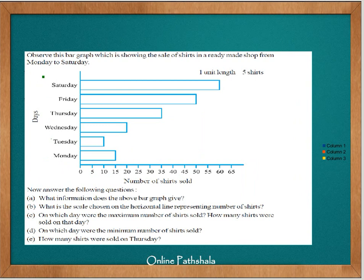This bar graph shows the sales of shirts in a ready-made shop from Monday to Saturday. The first question is: what information does the bar graph give? The bar graph tells us how many shirts were sold on each day in a week. The scale chosen on the horizontal line is 1 unit length equals 5 shirts.